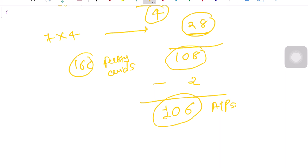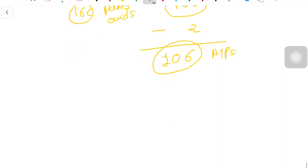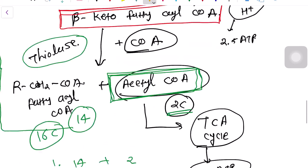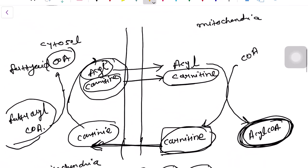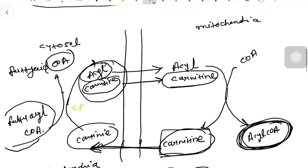The main regulatory step is carnitine transport. The enzyme CAT1 (carnitine acyl transferase 1) acts in the cytosol side and CAT2 (carnitine acyl transferase 2) acts on the mitochondrial side. This carnitine transport step is the main regulatory step of beta oxidation.